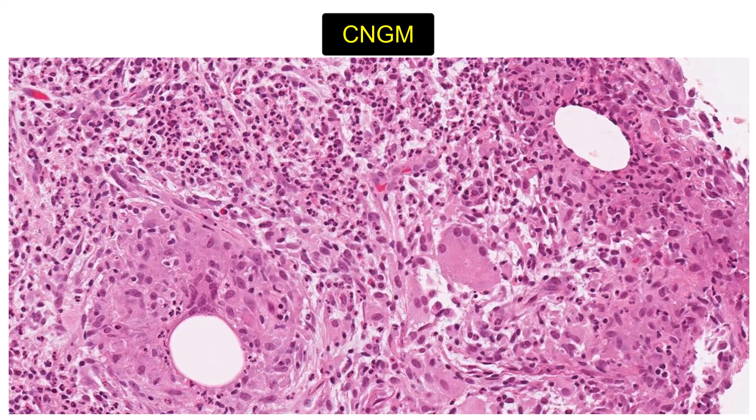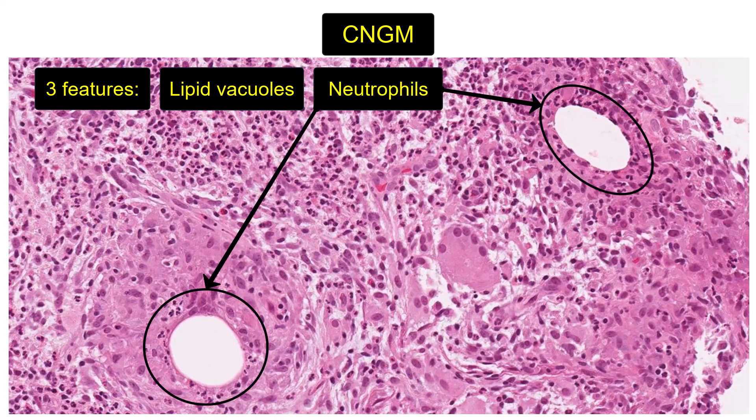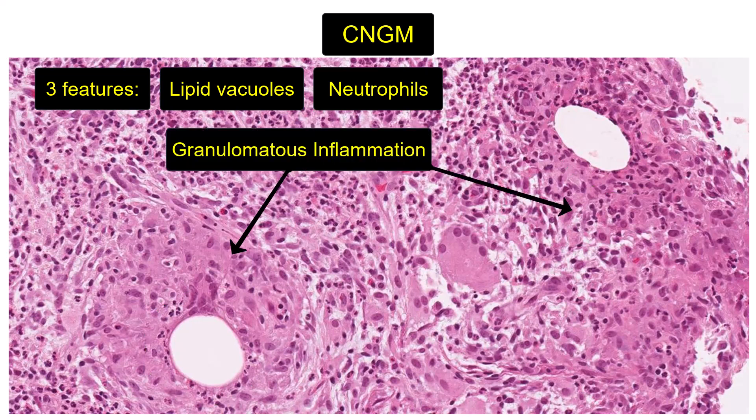CNGM is a subtype of granulomatous mastitis characterized by the presence of three features: first, lipid vacuoles appearing as cystic spaces; second, lined with neutrophils; and third, surrounded by a cuff of epithelioid histiocytes, representing granulomatous inflammation.